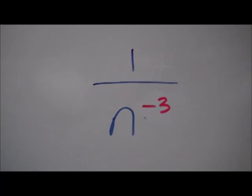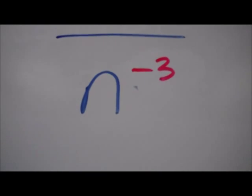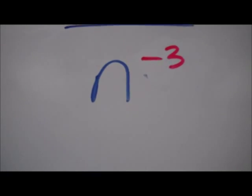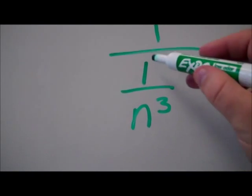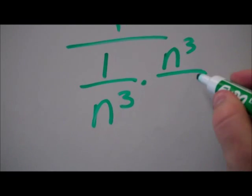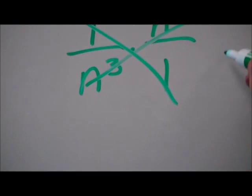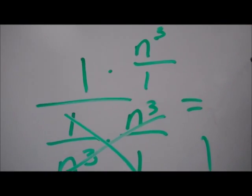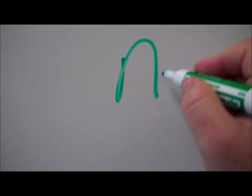What if I have 1 over n to the negative 3 power? We talked about this yesterday in class. The n to the minus 3 becomes 1 over n to the third. But you can't have a fraction as your numerator or denominator, so in order to get rid of that, I have to multiply by the reciprocal — n to the third over 1 — and whatever I do to the bottom, I have to do to the top. These cancel out to a 1, and 1 times n to the third is n to the third. So any time we have 1 over n to the minus something, it will be n to that power.